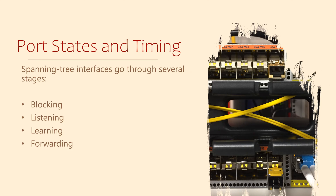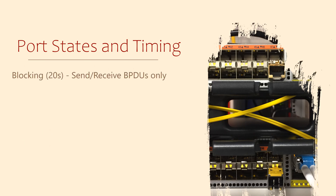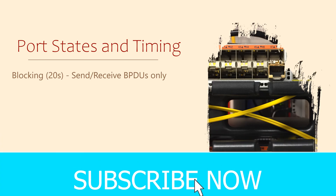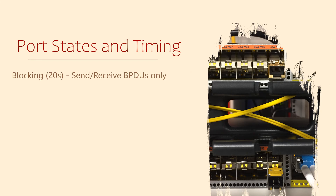In the original version of Spanning Tree, these are known as blocking, listening, learning, and forwarding. First, the blocking state. For 20 seconds, the switch will not allow any traffic to pass, other than BPDUs of course. This gives the switch time to determine if this will be a root port, designated, or remain blocking to prevent loops. If it remains blocking, then it won't transition through the remaining states.